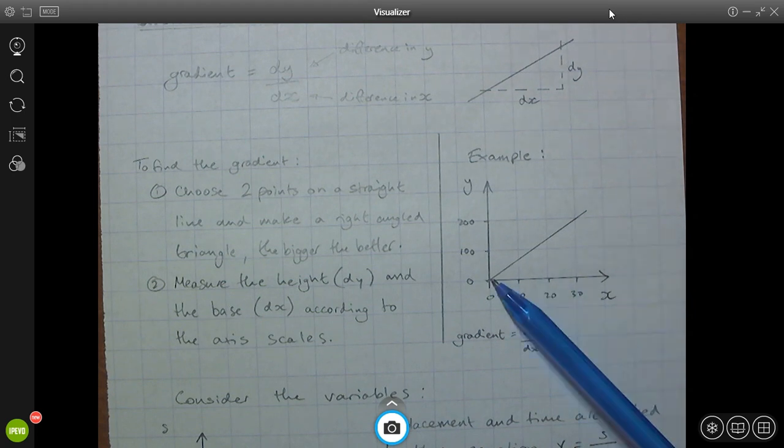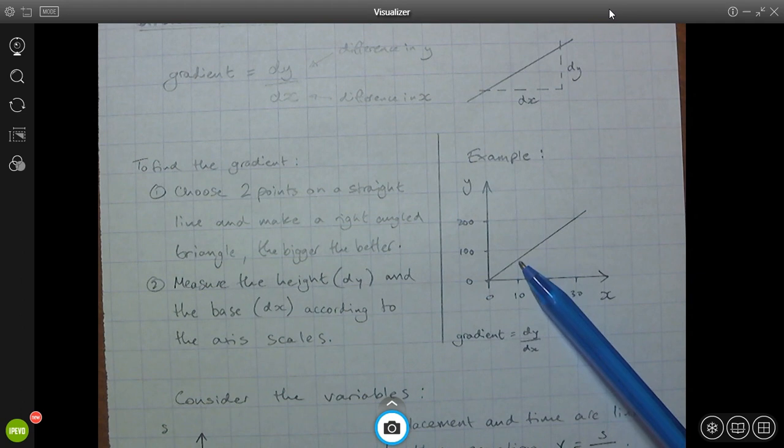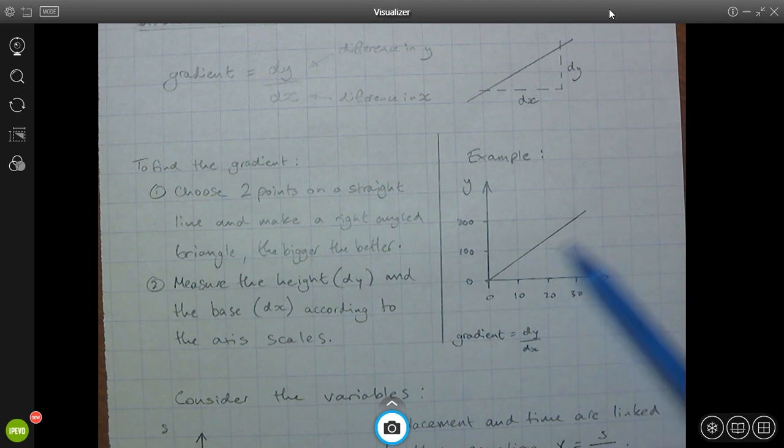So I'm going to pick two points. I could pick this point and this point and make a little triangle. But the bigger the triangle is, the easier it is to read off the scale, and the more accurate your gradient is going to be. So a nice big triangle.